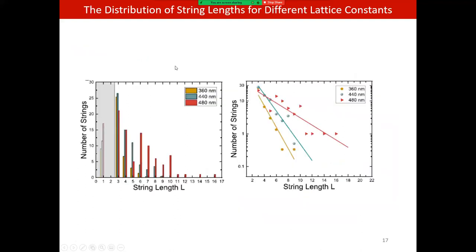Here is the analysis of string number and string lengths as a function of lattice constant. As the lattice constant increases, both string numbers and string lengths increase. In logarithmic scale, as the lattice constant increases linearly, string number and string lengths increase logarithmically — showing a logarithmically linear behavior.